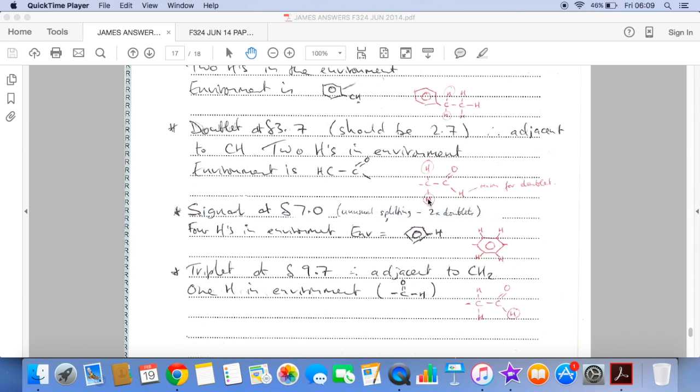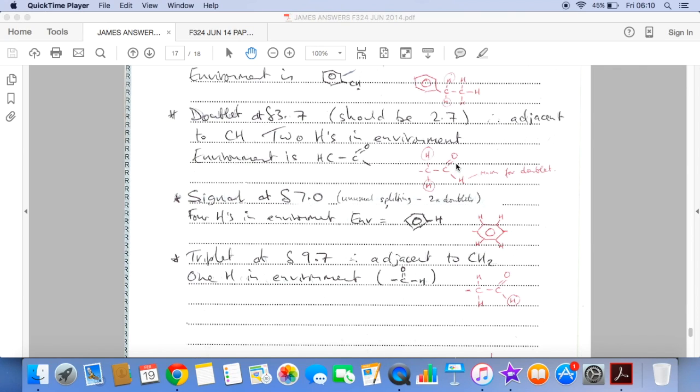So what could cause that? Well it could be something like this. So these are causing the peak and the fact that they're adjacent to this H, this single H, would mean that these would come out as a doublet. So it's looking like an aldehyde now.